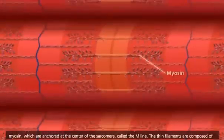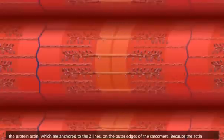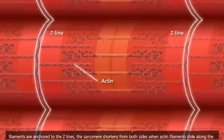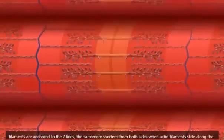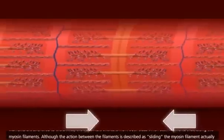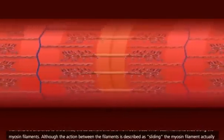The thick filaments are myosin, which are anchored at the center of the sarcomere, called the M-line. The thin filaments are composed of the protein actin, which are anchored to the Z-lines on the outer edges of the sarcomere. Because the actin filaments are anchored to the Z-lines, the sarcomere shortens from both sides when actin filaments slide along the myosin filaments.